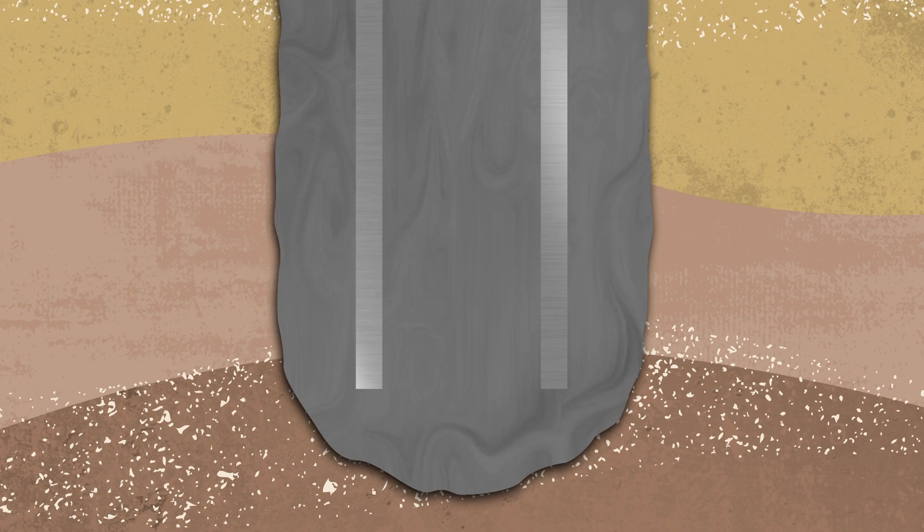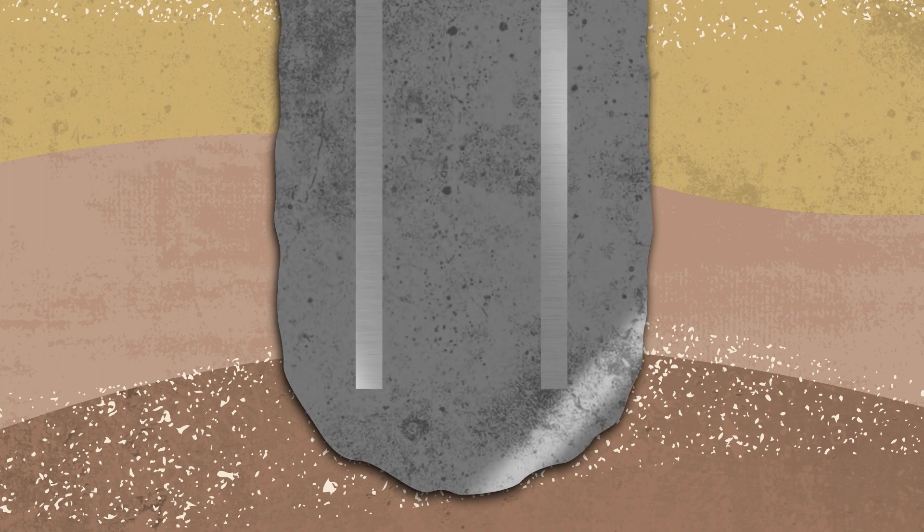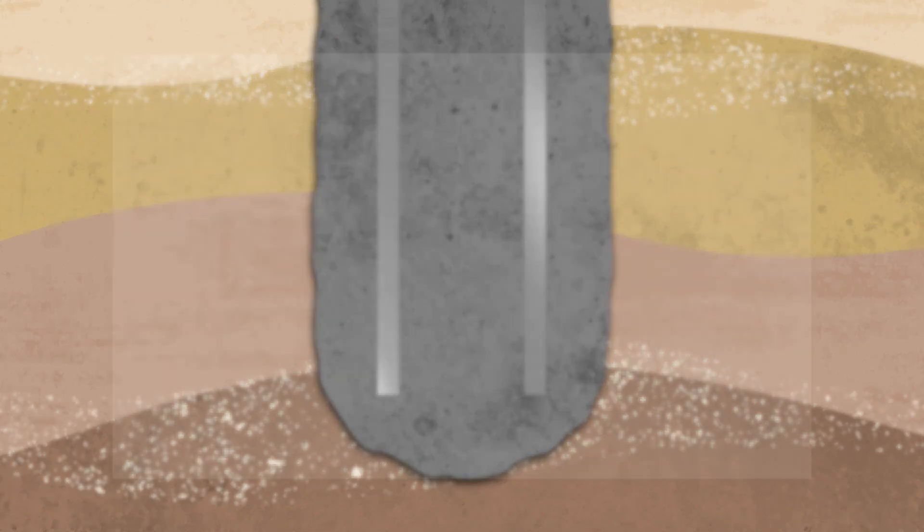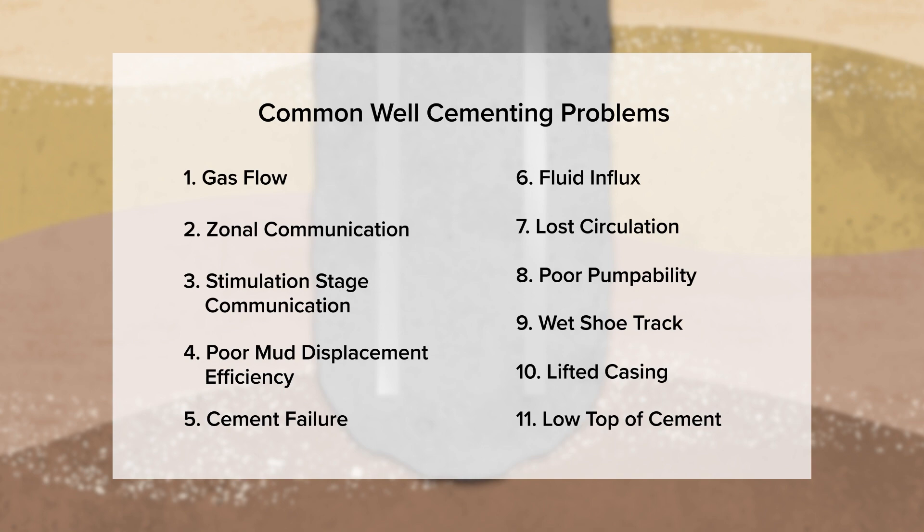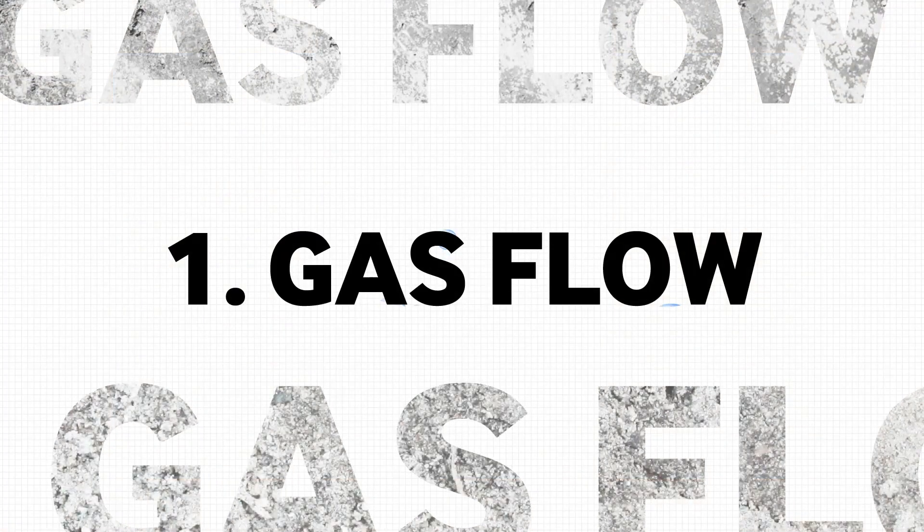Cement is foundational to a well's life cycle, and a high-quality cement sheath can prevent problems ranging across the spectrum from gas migration to casing failure. This video will explore the most common well cementing problems and some of the best ways to address them, starting with unwanted gas flow.